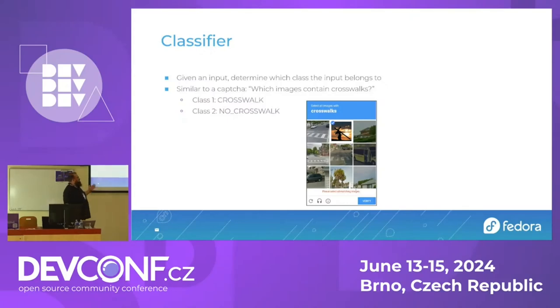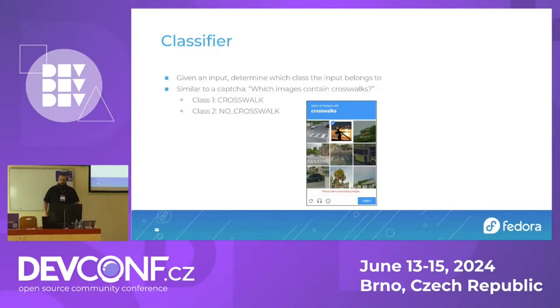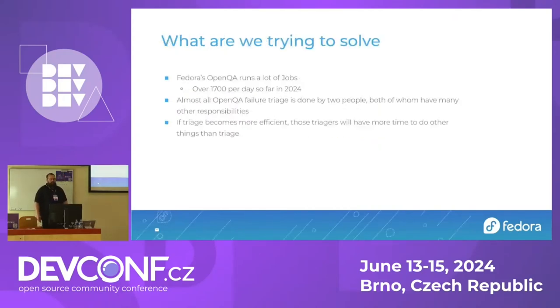You can classify each one of those starting from the top: crosswalk, not a crosswalk, not a crosswalk, so on and so forth. That is the idea of a binary classifier.